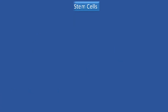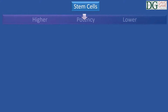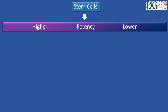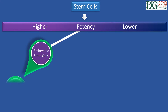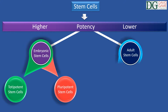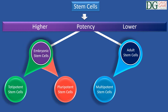Stem cells are categorized according to their potency, that is the ability to differentiate into other cell types. Embryonic stem cells can be either totipotent or pluripotent in nature, while adult stem cells are either multipotent or unipotent.